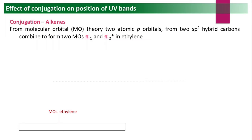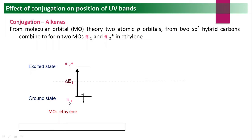From molecular orbital theory: in ethylene, two atomic p orbitals from two sp2-hybridized carbons combine to form two molecular orbitals — π1 (bonding) and π2* (antibonding). The two pi electrons occupy the ground state. By absorbing energy ΔE, the electron is promoted to the π* excited state, and this energy gap determines the lambda max.